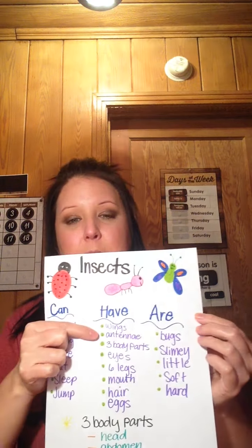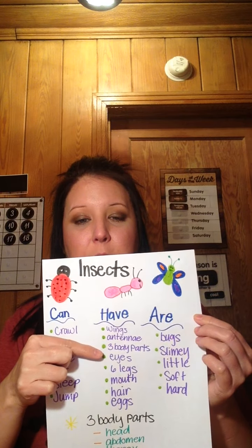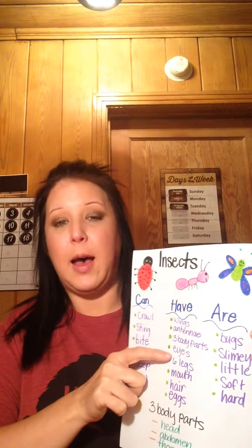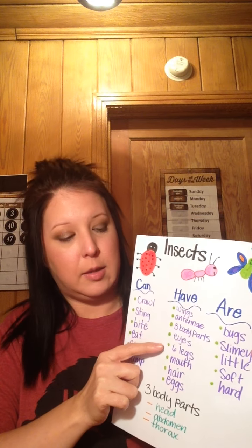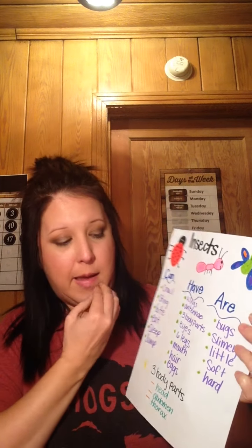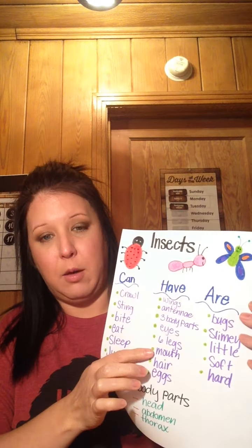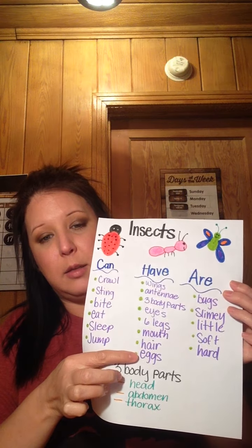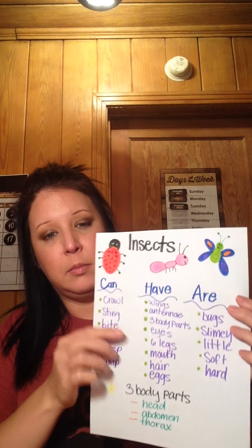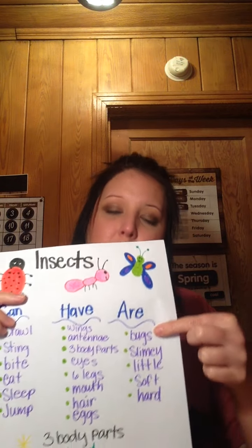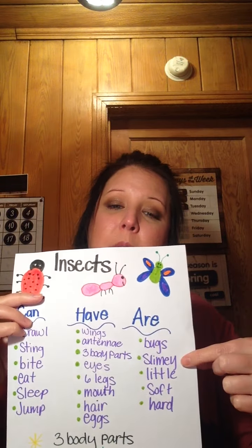Insects have wings, antennas, they have three body parts, they have eyes like we have eyes, they have six legs, they have a mouth, they have hair, and they lay eggs.